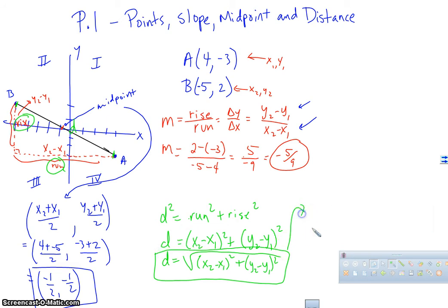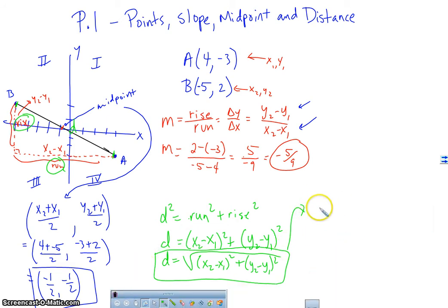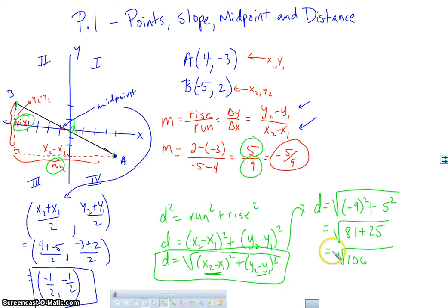So we'll go ahead and plug that in real quick. For our problem, D equals the square root of, we know what x2 minus x1 is right here. Negative 9 squared. And y2 minus y1 was up here. So that's 5. So 5 squared. So we're going to get the square root of 81 plus 25, which is the square root of 106. We'll just leave it at that. We can simplify that a little bit, but we'll just go ahead and leave it like that, okay?